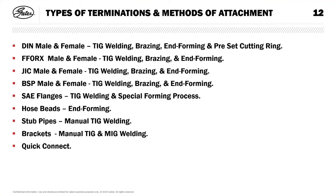We can do hose beads, so where you've got low pressure and textile braid hose, these can be clamped onto the tube. We do stub pipes, which is like a tee piece coming out of the tube — you're actually using the tube as a manifold. We do brackets which are manually welded, TIG or MIG. And we do quick-connect connectors on the end of the tubes, which are welded.